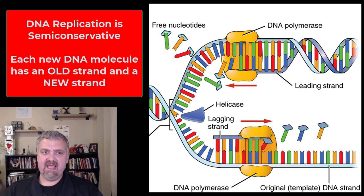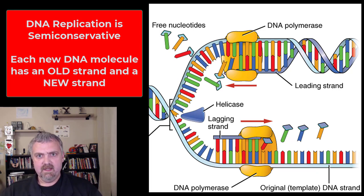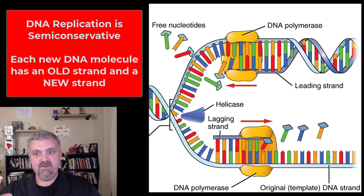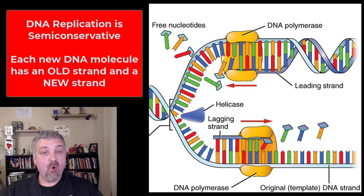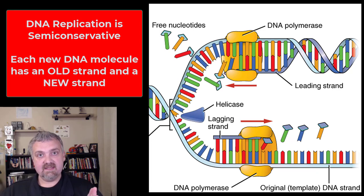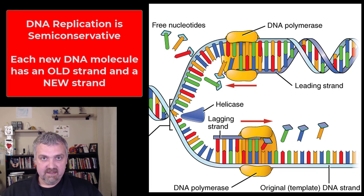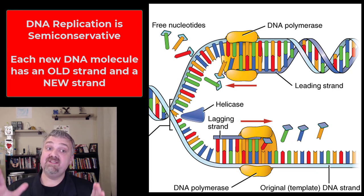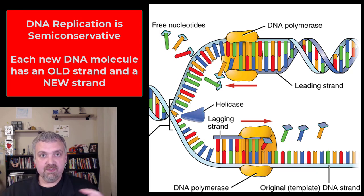I wanted to zoom in here to show one more thing before we get into the lagging strand. A key word you're going to see is that DNA replication is a semi-conservative process. That means there isn't any brand new DNA. As one piece of DNA becomes two brand new daughter strands, each new piece of DNA has an old strand and a new strand — that's what semi-conservative means. This is very important because it results in fewer copying errors, similar to making a photocopy from a template rather than rewriting from scratch. So all new double-stranded DNA has an old strand — the template — and a new strand.